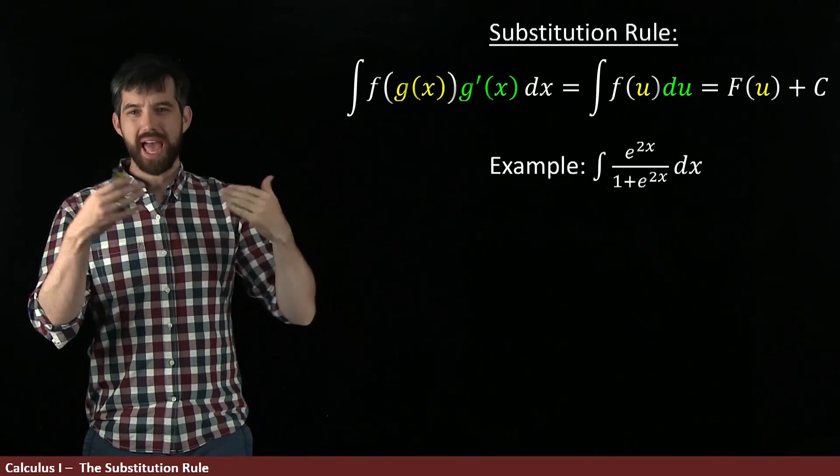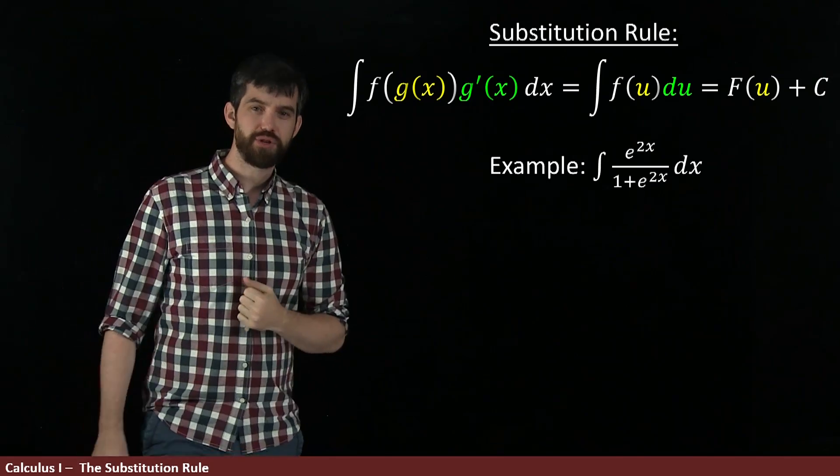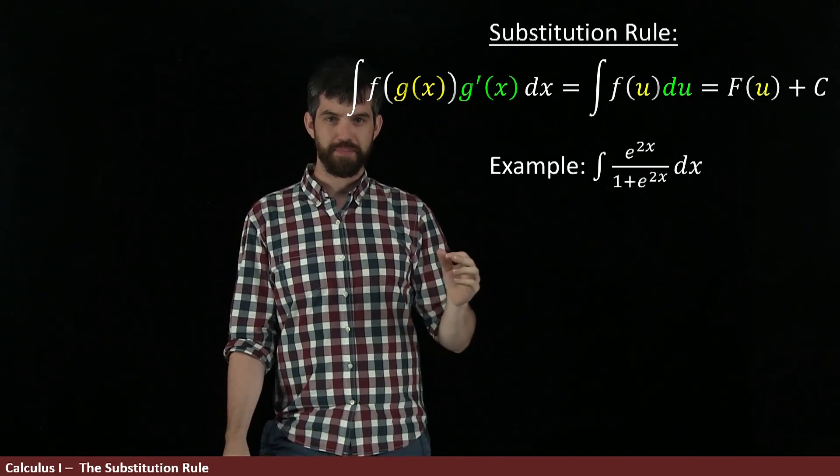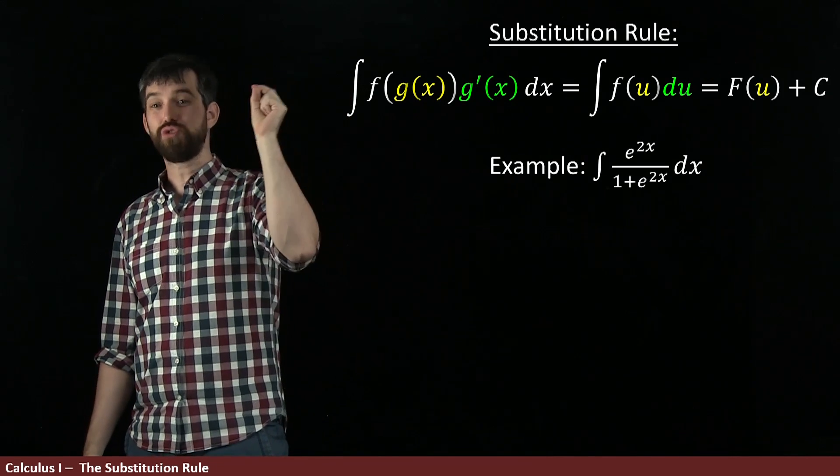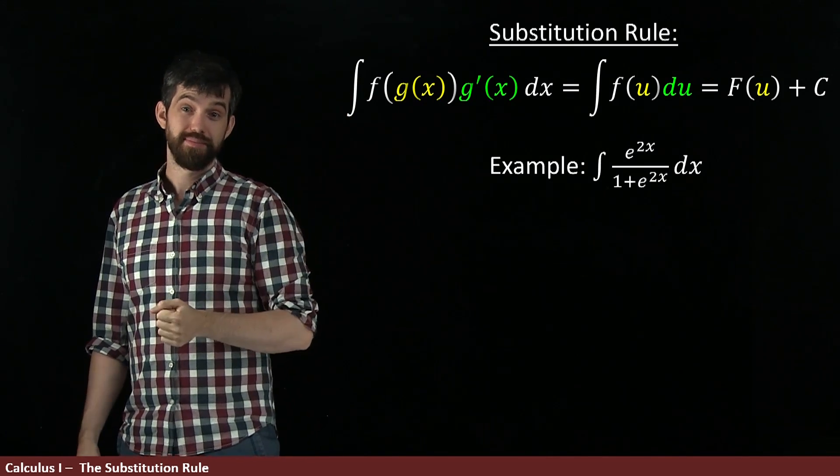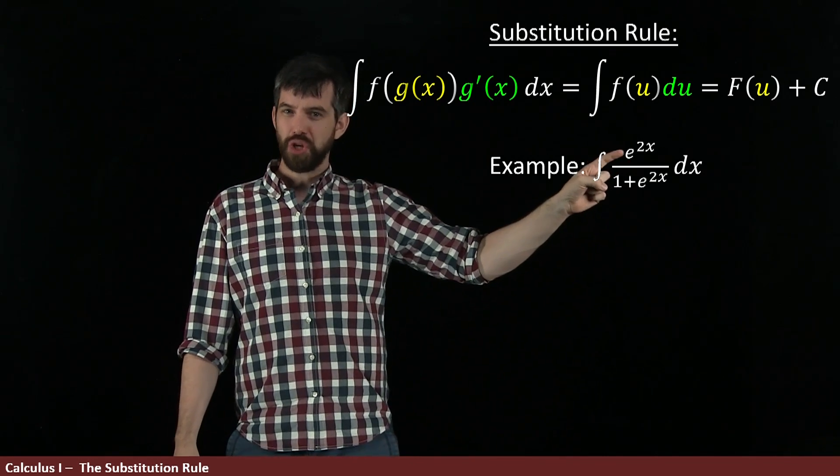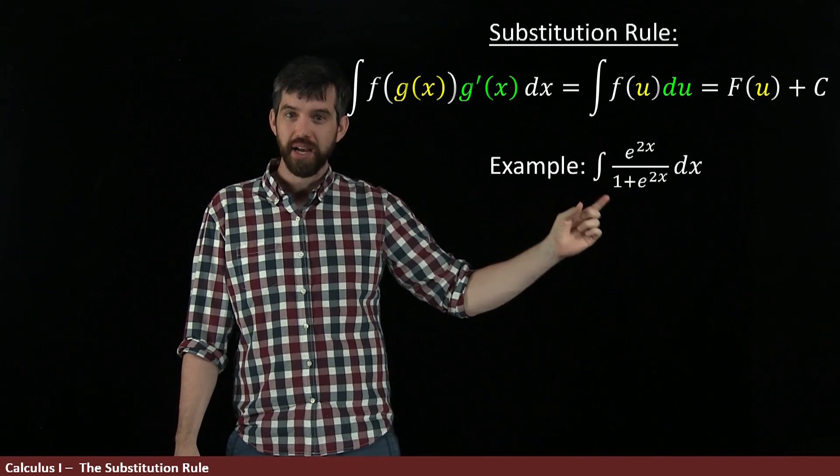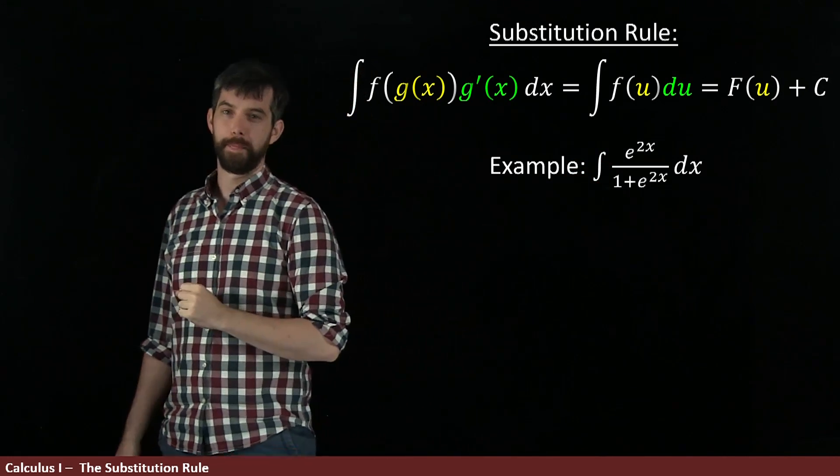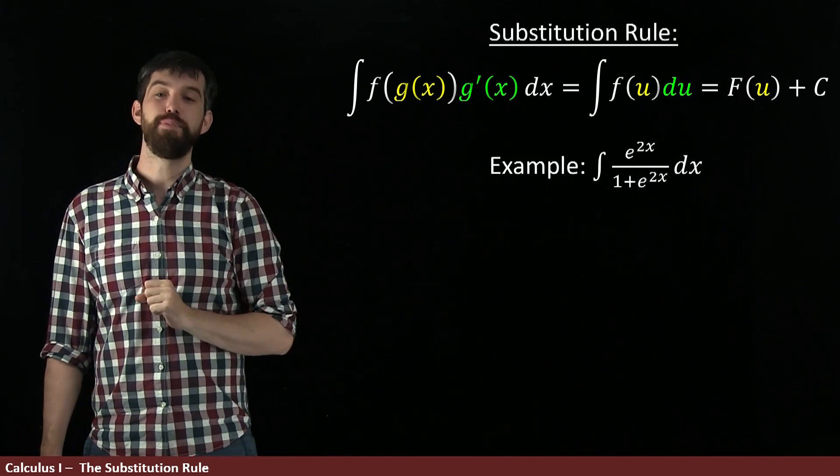So to figure out what's my f here and what's my u? Now one of the things that I can note right off the top is that when I take the derivative of 1 plus e to the 2x, I'm going to get twice e to the 2x. There's this factor of 2 there that's a bit confusing, but it looks like the top here is related, off by a factor of 2, but it's related to the derivative of the bottom. So let me experiment with setting u to be that denominator.